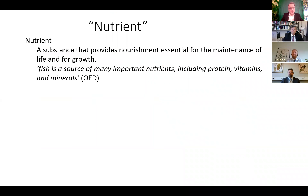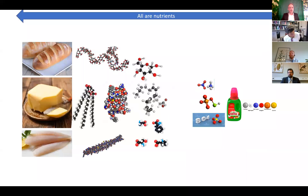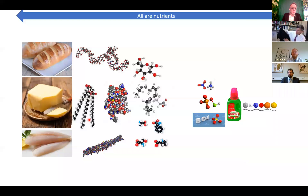What is a nutrient? It's defined by the Oxford English Dictionary as a substance that provides nourishment essential for the maintenance of life and for growth. Fish is an example — it's a source of many important nutrients including protein, vitamins, and minerals. All the things you can see here are nutrients.